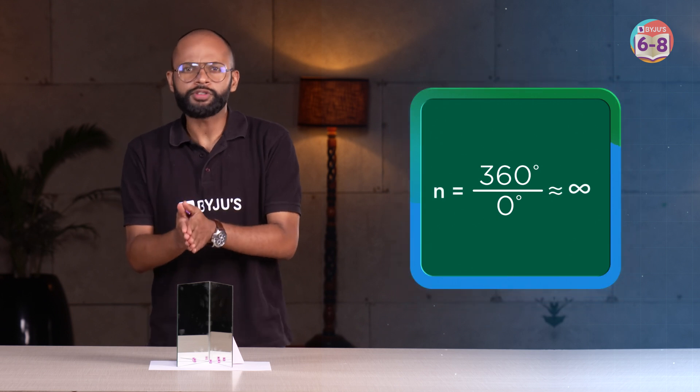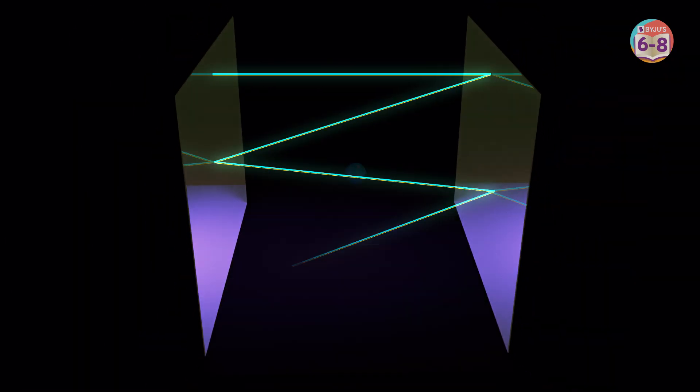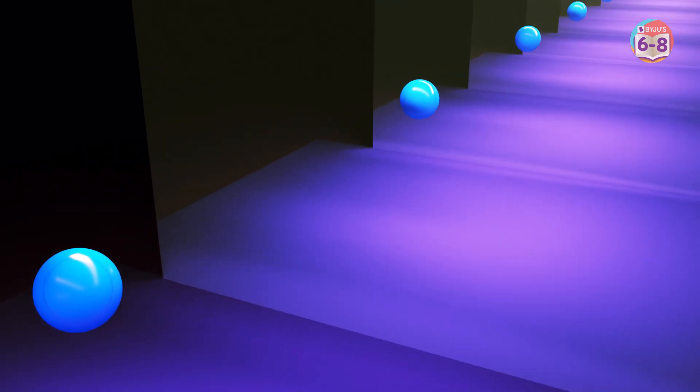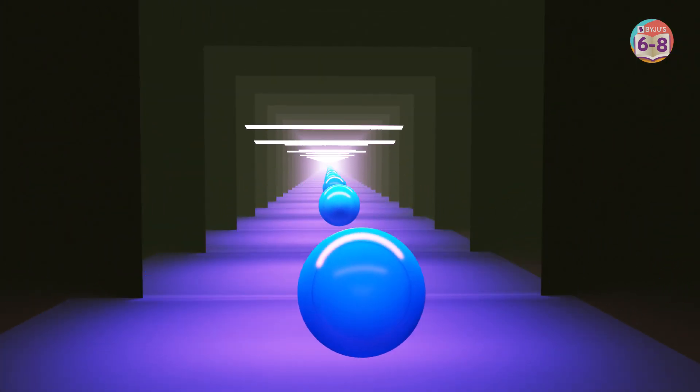Now, in theory, if you reduce the angle to zero or you make the mirrors parallel to each other, means you will see infinite images and that's what you see in the barbershop. That's correct. That's the magic of multiple reflection.